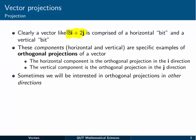These components, horizontal and vertical, are specific examples of what are called orthogonal projections of a vector. The horizontal component is the orthogonal projection in the i direction, and the vertical component, similarly, is the orthogonal projection in the j direction.